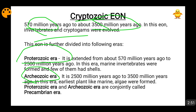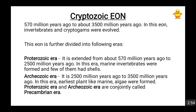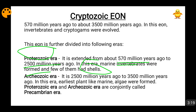The Proterozoic Era extends from 570 million years ago to 2,500 million years ago. During this era, marine invertebrates were formed and few of them had shells. I am just telling you the division of the time scale — don't go into the technicalities. Then comes the Archeozoic Era, which lasted from 2,500 million years ago to 3,500 million years ago. During this time period, early marine plants and algae were formed.